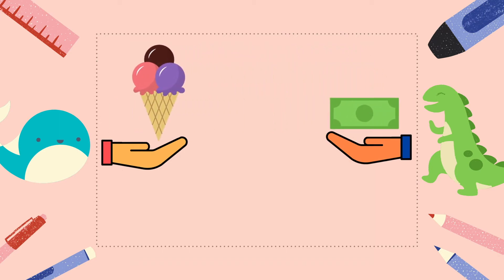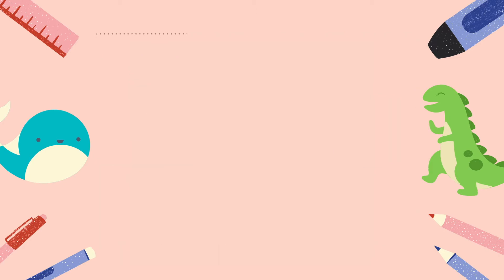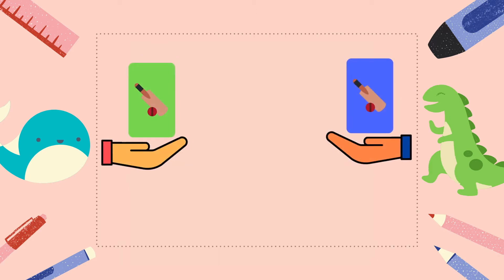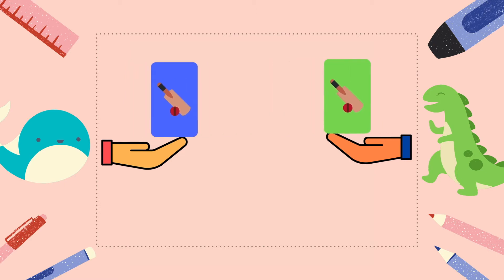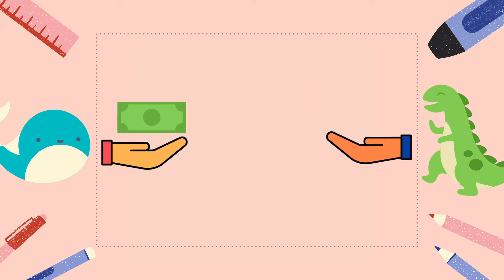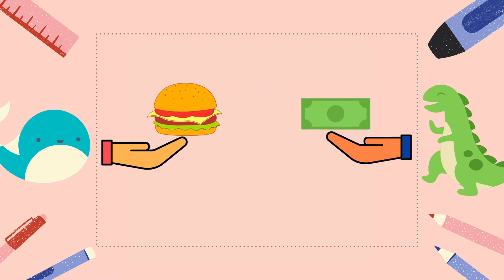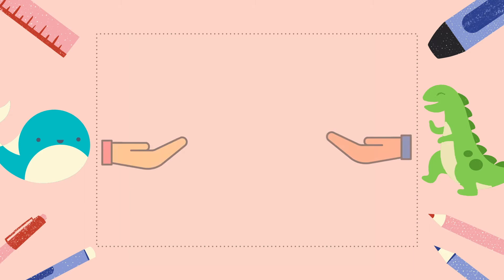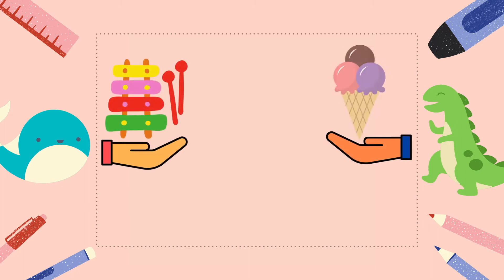When you go to an ice cream parlor, you exchange money for ice cream — much the same way as you exchange cricket cards or Pokemon cards with your friends. And then the shopkeeper exchanges your money for other things he needs. So now imagine if there were no notes or coins available to exchange. What will you do to get that ice cream?